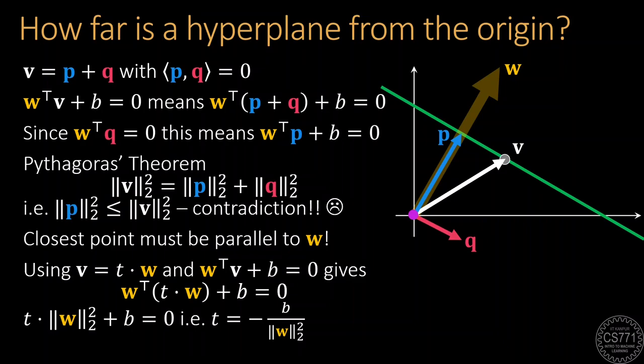Let that vector be T times W where T is some unknown scalar. Since T times W lies on the hyperplane, we must have T times W transpose W plus B equal to 0, which gives us the closest point as well as the distance to the hyperplane.